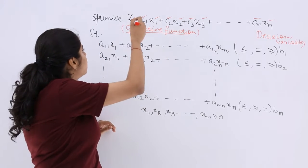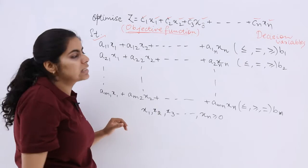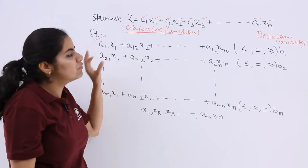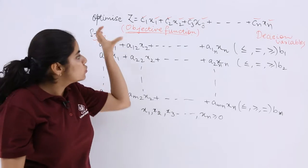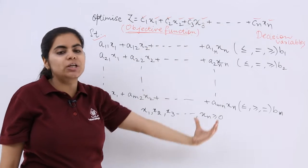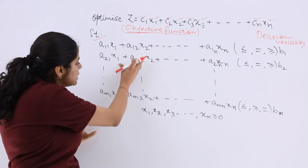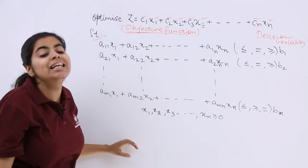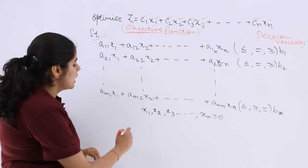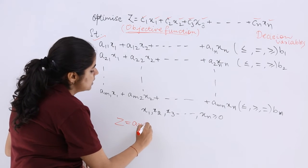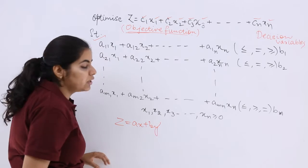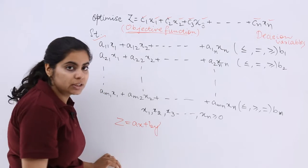So with regard to the real world, there are these constraints which we write ST, which is subject to. So this objective function is subject to certain constraints, and these constraints are basically inequalities.